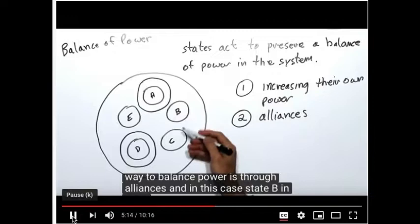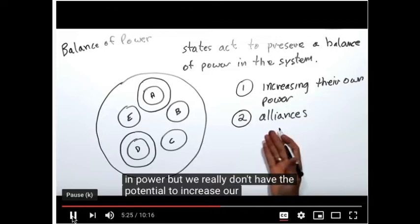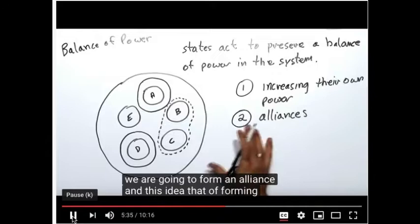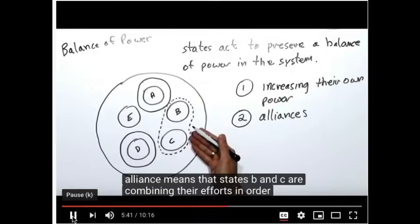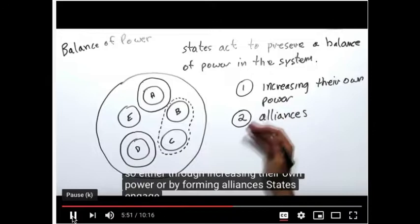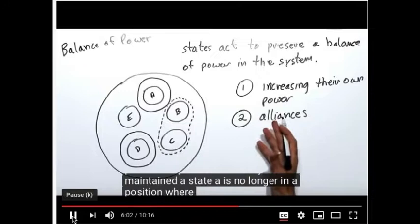In the case of alliance formation, states B and C may look at the growth in power by state A and recognize they don't have the potential to increase their own power, so they form an alliance. By combining their efforts, states B and C balance the growing power of state A. Whether through increasing their own power or forming alliances, states engage in balance of power behavior to maintain equilibrium — ensuring state A is no longer in a position to dominate the system.